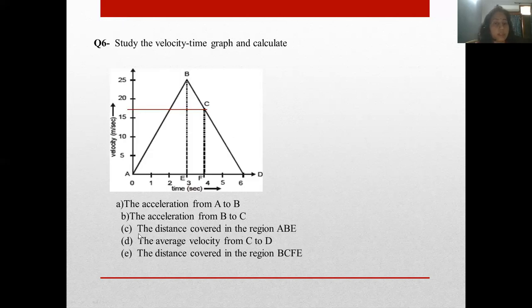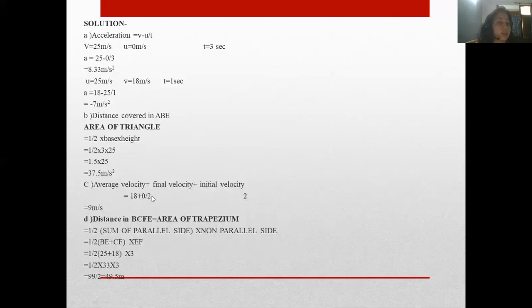Now third is the average velocity from C to D. C to D what is the velocity? Average. You studied average velocity: initial velocity plus final velocity divided by 2. Here what is its velocity? It reached here, reached up to D. D is at this point, velocity became zero. 18 + 0 divided by total time. From C to D how much time is it taking? 2 seconds, look: 4 to 5, 5 to 6, 2 seconds. That is 18 + 0 divided by 2 is 9 meter per second. Velocity is meter per second.